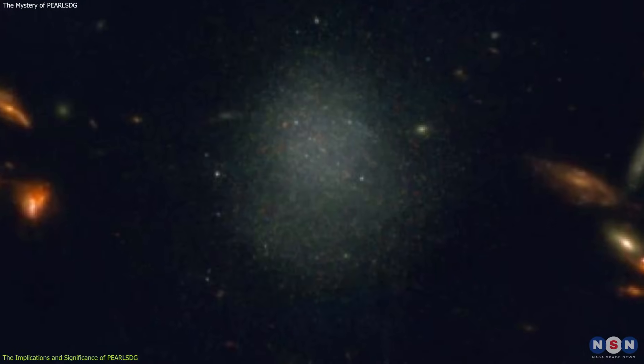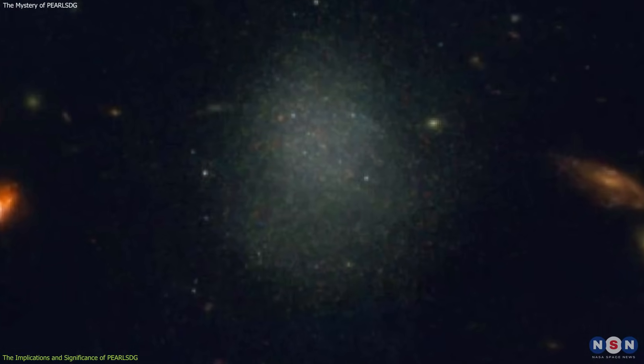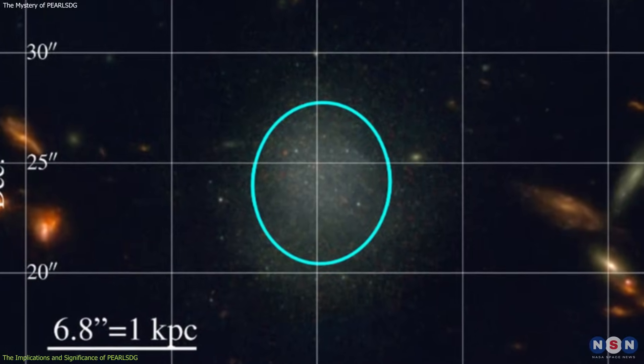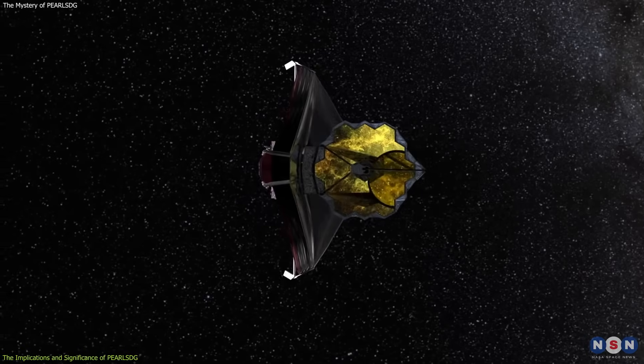PEARLS DG is also very faint, with a luminosity of only about 0.1% of the Milky Way, making it extremely hard to detect and observe.